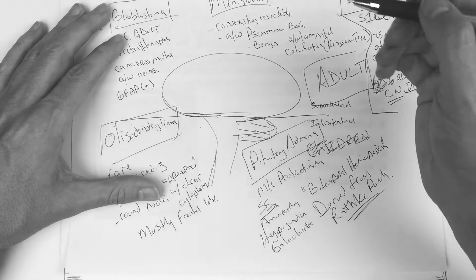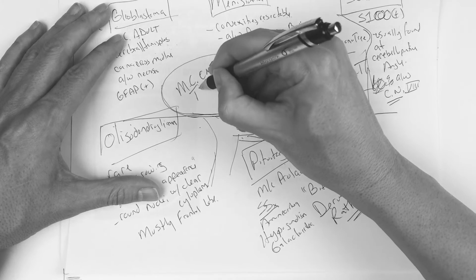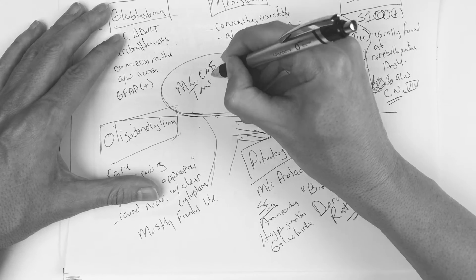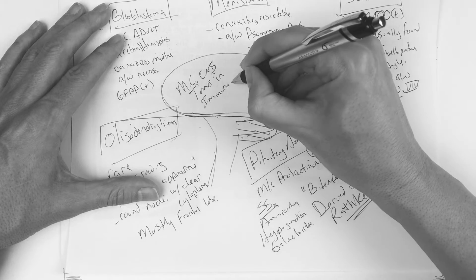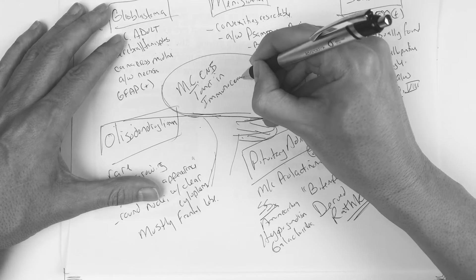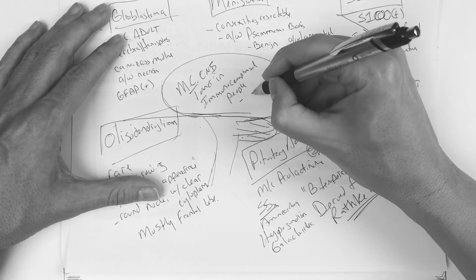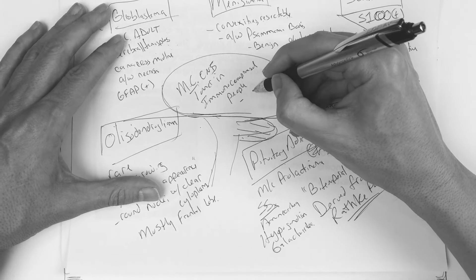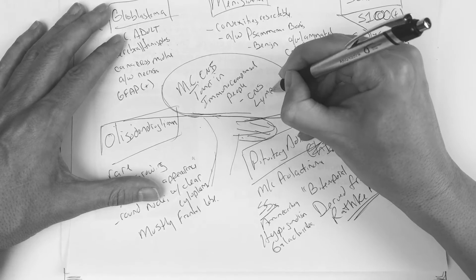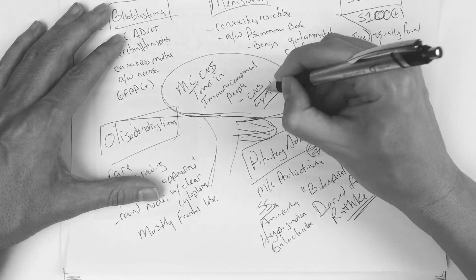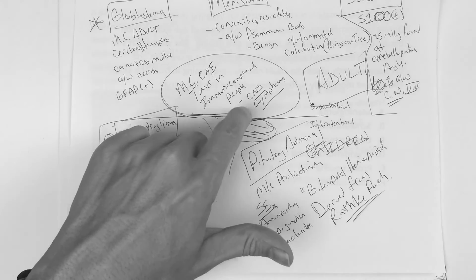Just for completeness: the most common CNS tumor in immunocompromised people is going to be the CNS lymphoma. That's just kind of an extra piece — CNS lymphoma, most common in immunocompromised.